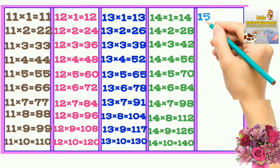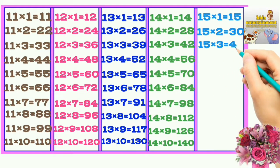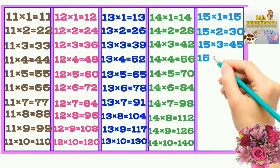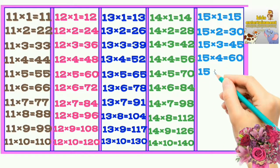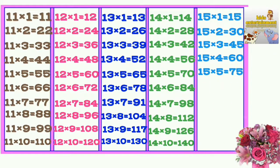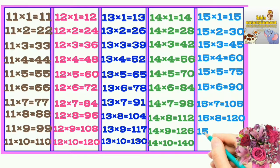15×1=15, 15×2=30, 15×3=45, 15×4=60, 15×5=75, 15×6=90, 15×7=105, 15×8=120, 15×9=135, 15×10=150.